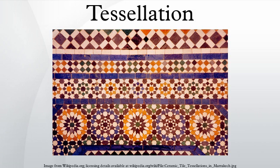Honeycombs are famous for the tessellating hexagons they use. Many other types of tessellation are possible under different constraints. For example, there are eight types of semi-regular tessellation, made with more than one kind of regular polygon but still having the same arrangement of polygons at every corner. Irregular tessellations can also be made from other shapes such as pentagons, polyominoes, and in fact almost any kind of geometric shape.